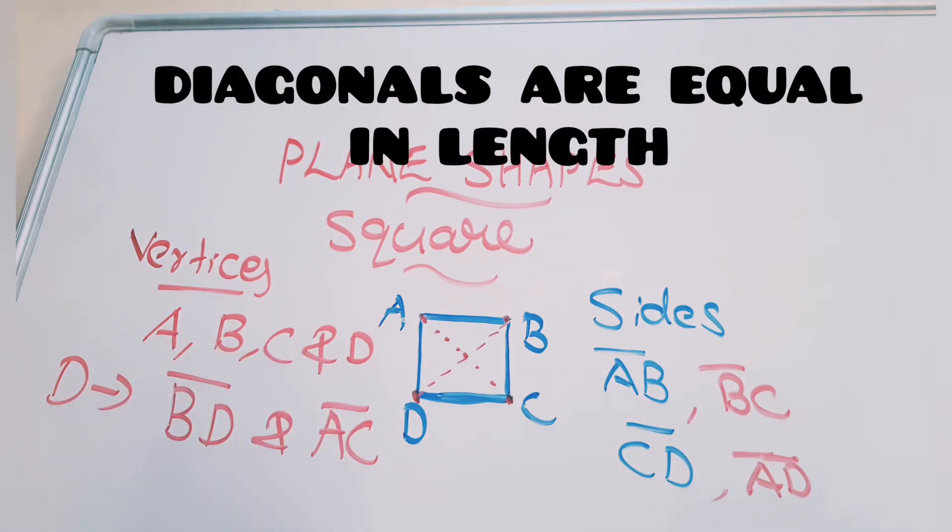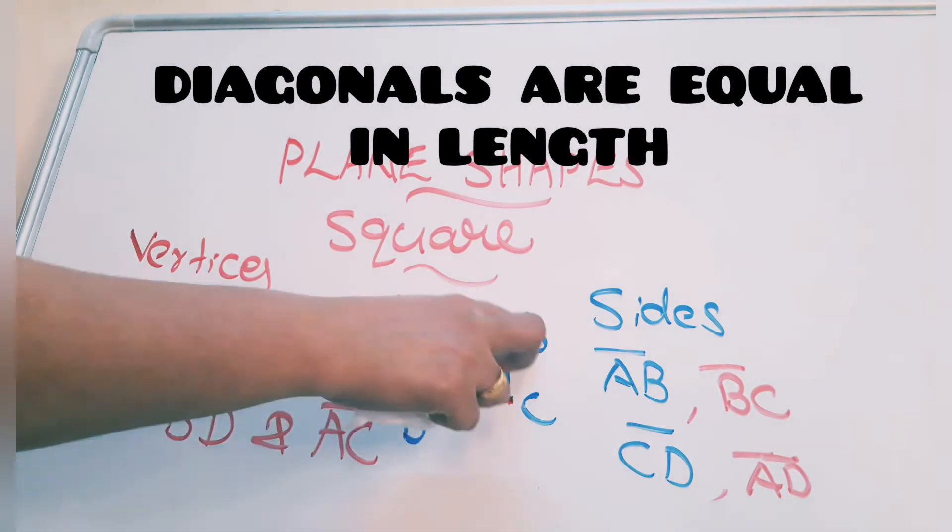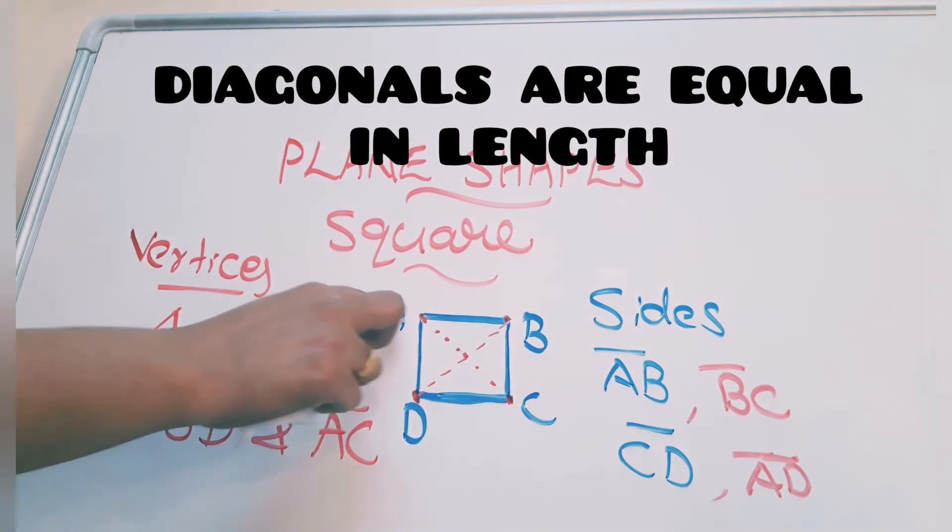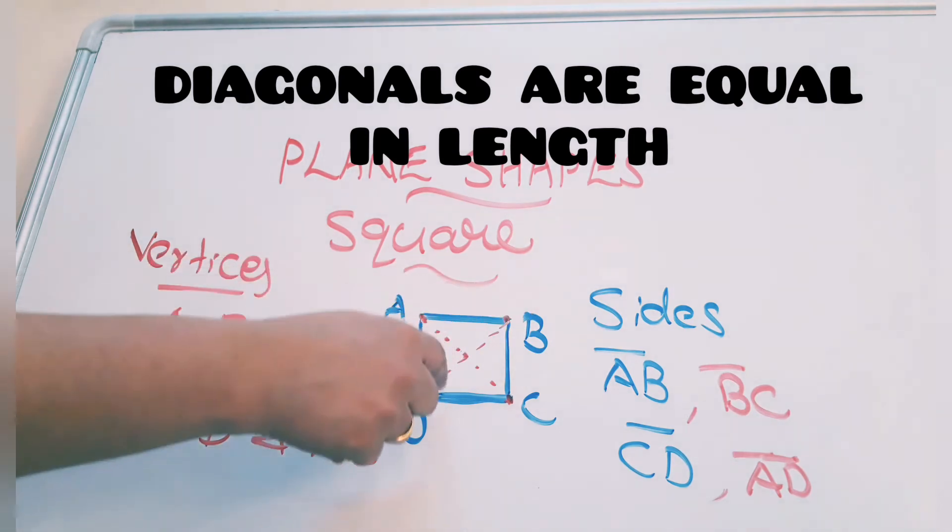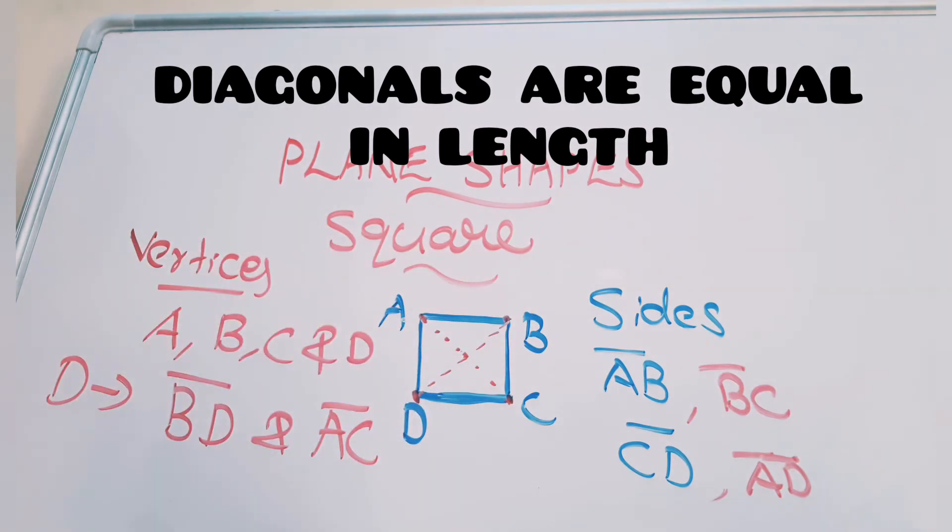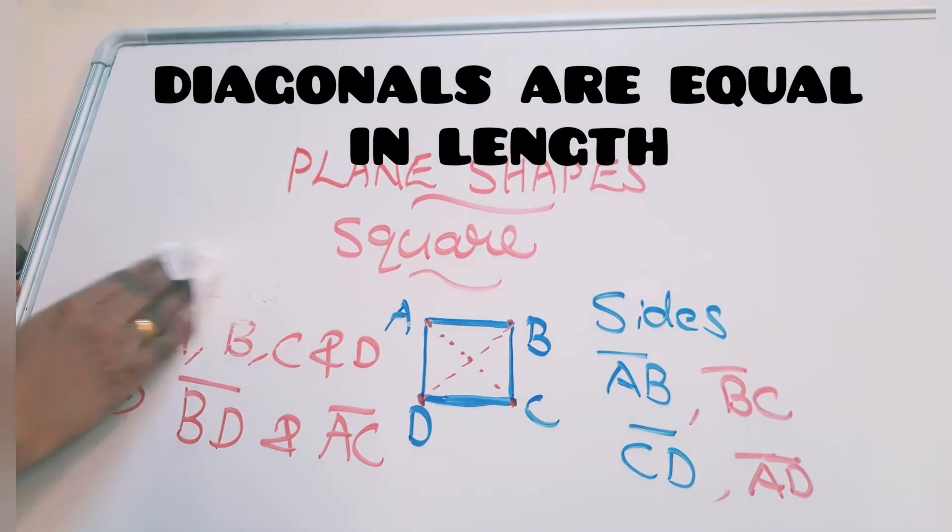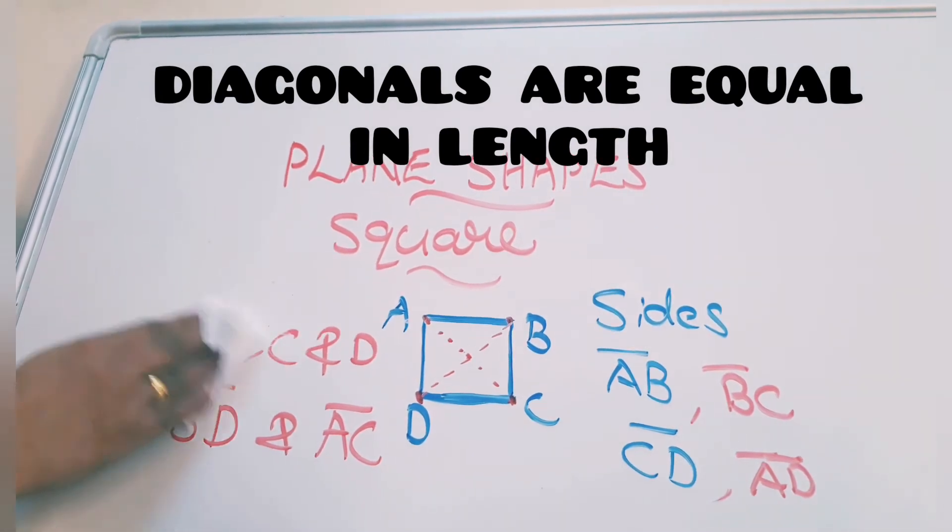Now we will see another example. I will give another name for this. So understood, BD is diagonal 1, AC is diagonal 2. BD or DB, any way we can read. Even AC or CA, both are okay. Any way we can read. Now I am going to change the name.